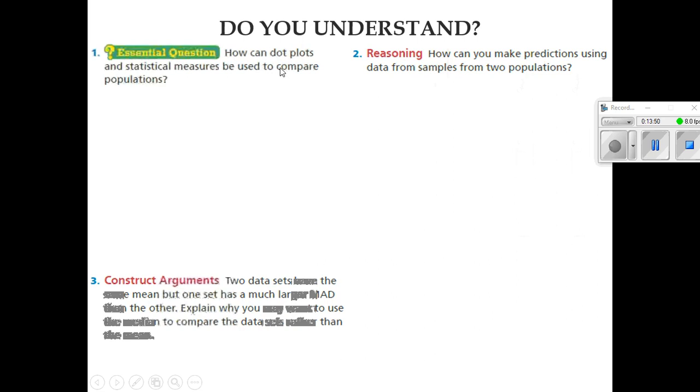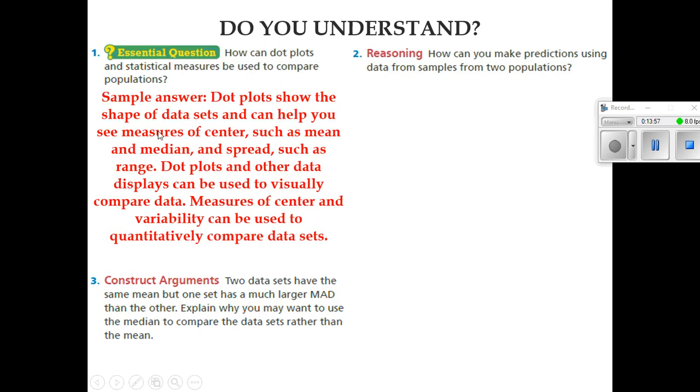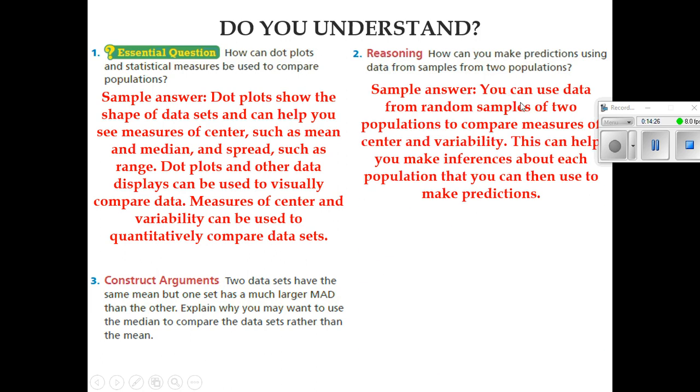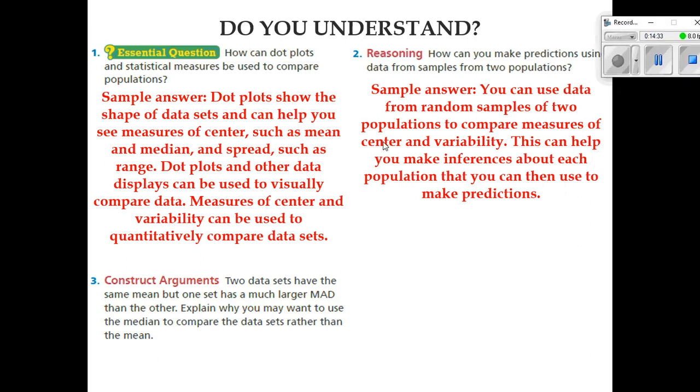I'm ready to go to the Do You Understand. How can dot plots and statistic measures be used to compare populations? Well, dot plots show the shape of the data sets and can help you see measures of center such as means and median and spread such as range. Dot plots and other data displays can be used to visually compare data. Measures of center and variability can be used to quantitatively compare data sets. How can you make predictions using data from samples from two populations? Well, you can use the data from random samples of two populations to compare measures of center and variability. This can help you make inferences about each population that you can then use to make predictions.